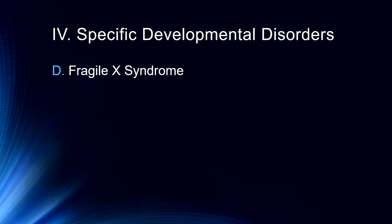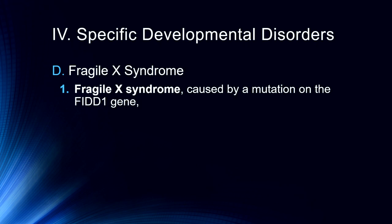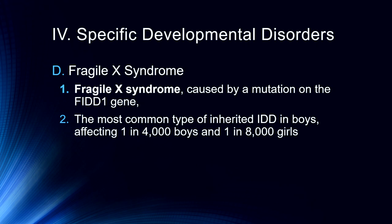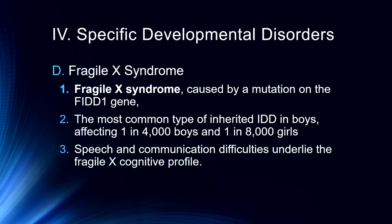Finally we get to Fragile X syndrome. Fragile X syndrome is caused by a mutation in the FMR1 gene. This is far more common in males — in fact it's the most common type of inherited intellectual developmental disorder in boys, affecting about one in 4,000, which is about twice the rate at which it's found in girls at about one in 8,000. Speech and communication difficulties underlie the Fragile X cognitive profile, which is particularly difficult for males who already oftentimes have lower verbal and communication abilities.